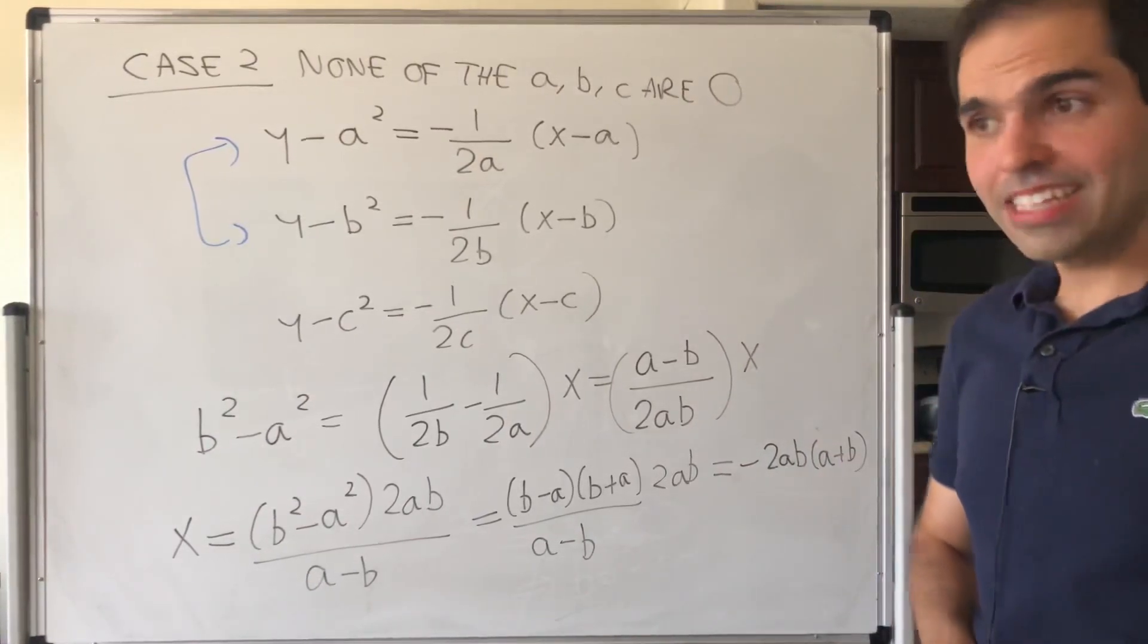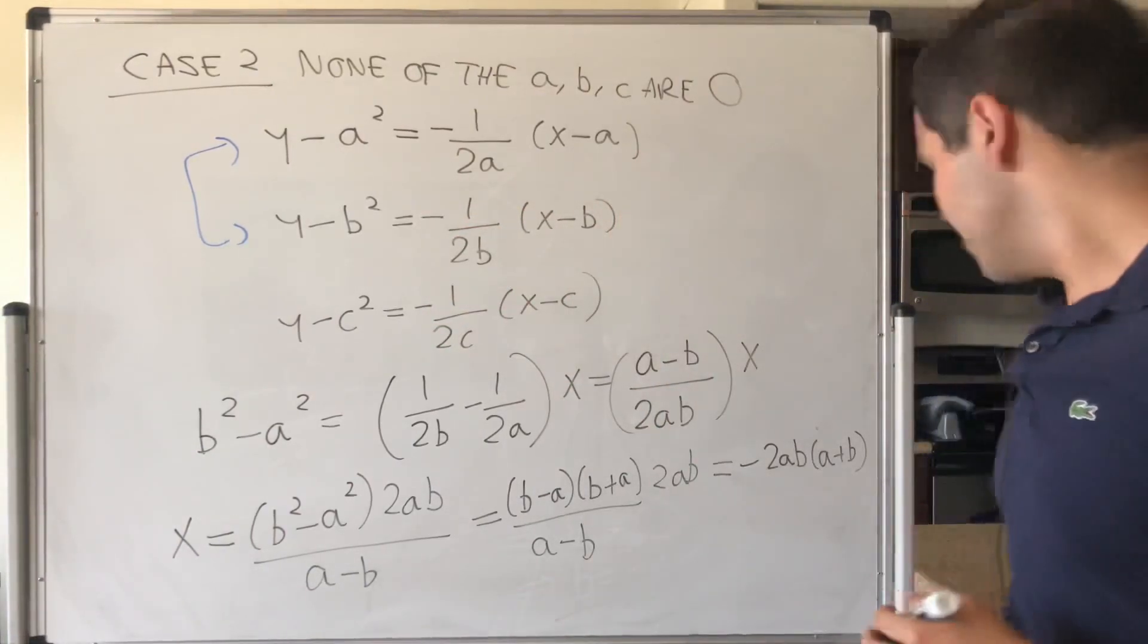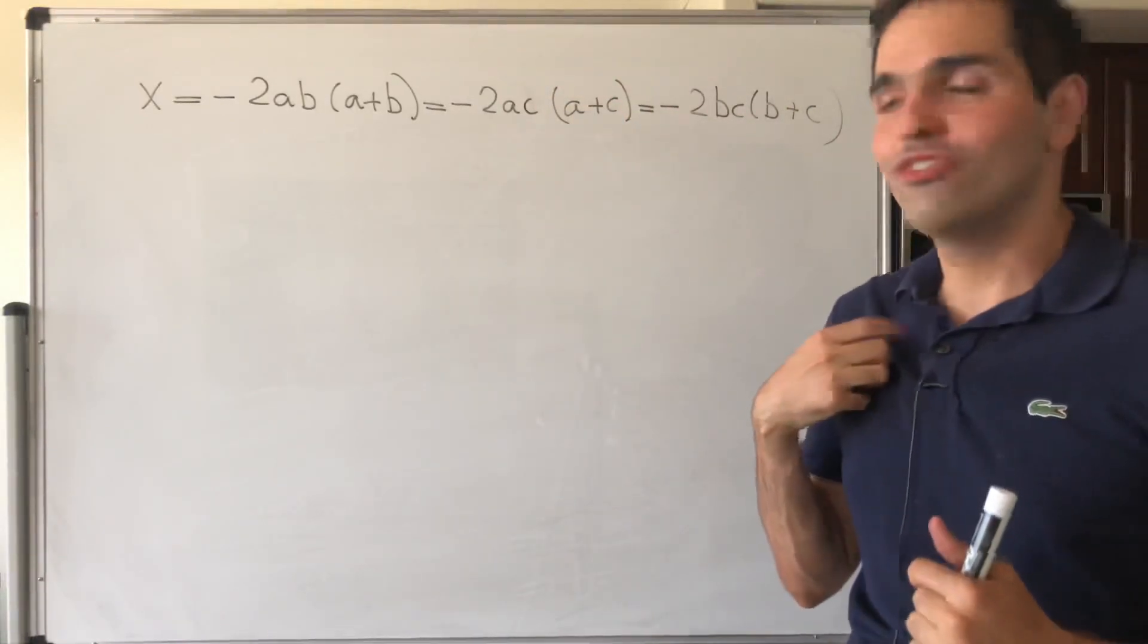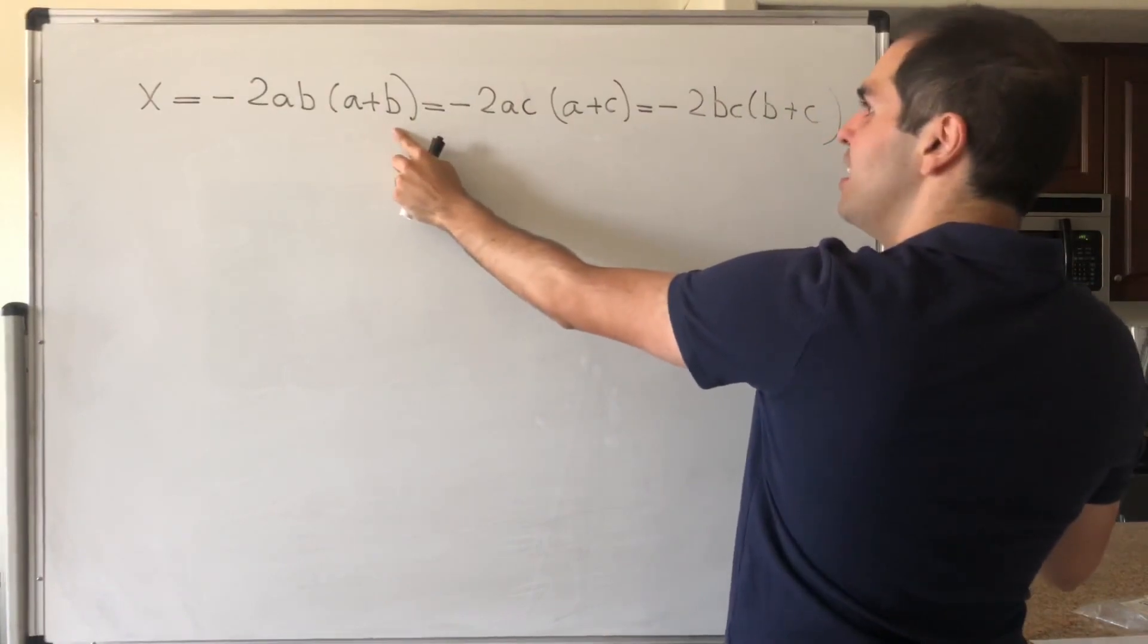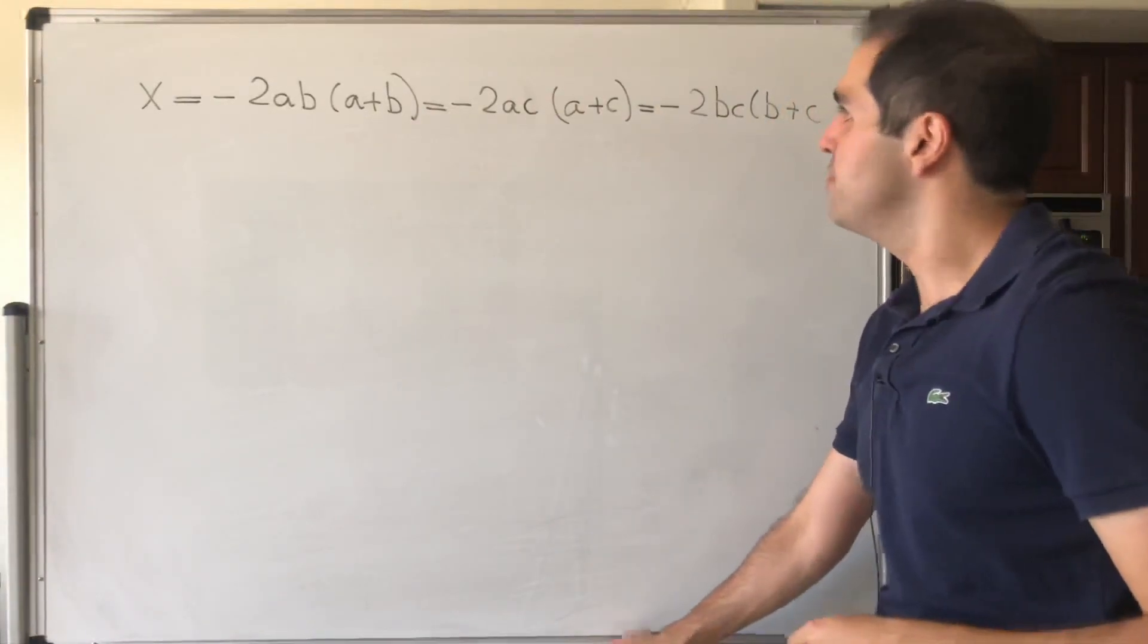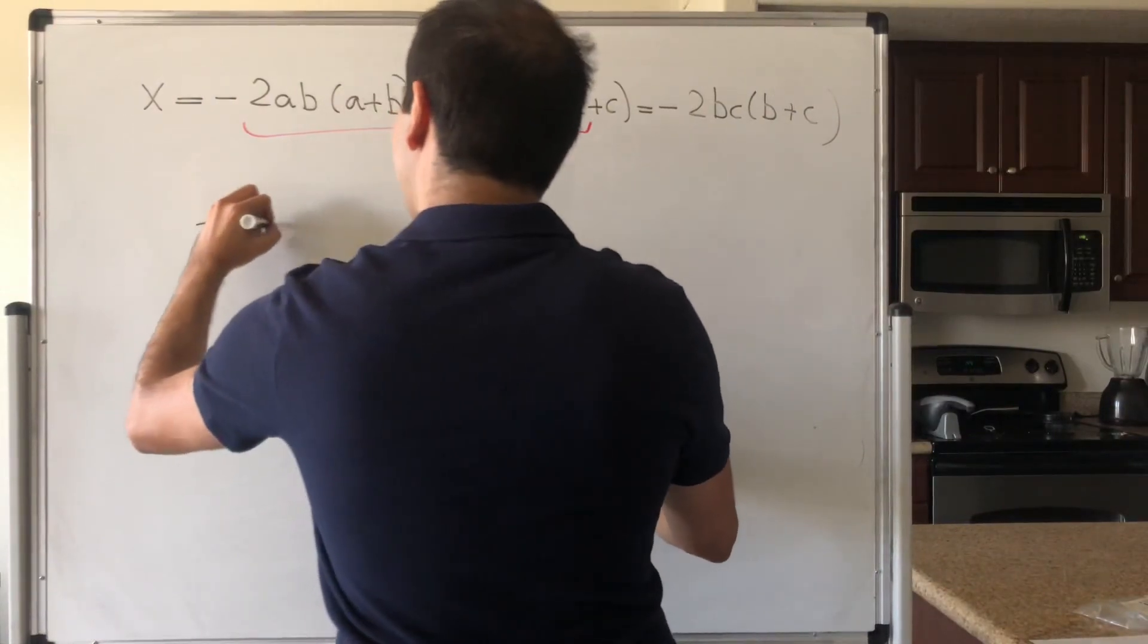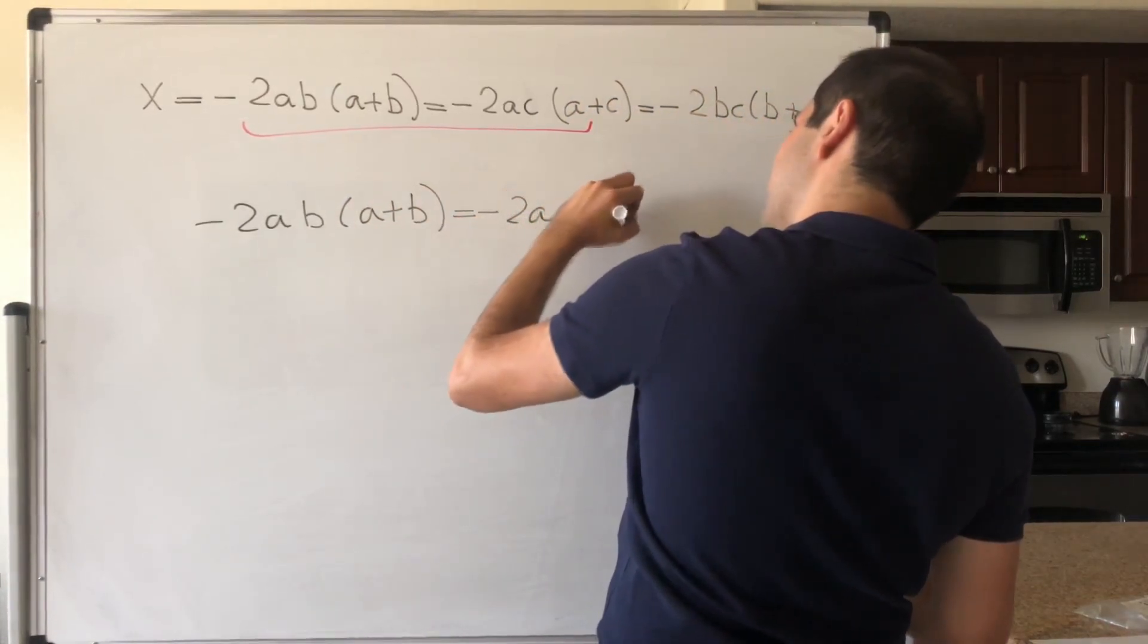So that is one expression for x, but the nice thing is, you can just simply repeat this with the second and third equations, and the first and third equations, and in the end you get a very nice identity for x. And then what you get is the following nice identity for x, which I would like to remind you is the common point of intersection, namely x is minus 2ab times a plus b, and minus 2ac times a plus c, and minus 2bc times b plus c. But this last one doesn't really matter. Let's just look at the first two, and let's see if we can simplify some things.